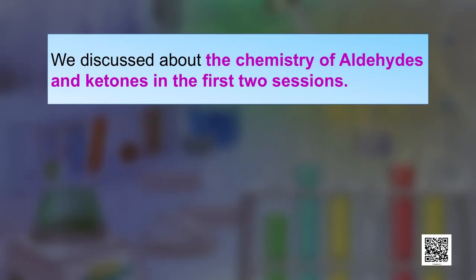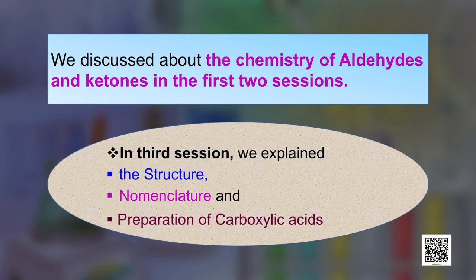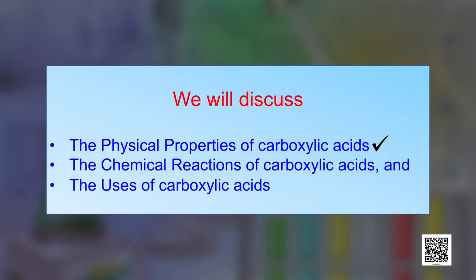Welcome learners to this last session on aldehydes, ketones, and carboxylic acids, Part 4. This is the fourth and last session of this series. We discussed the chemistry of aldehydes and ketones in the first two sessions, while in the third session we explained the structure, nomenclature, and preparation of carboxylic acids. In continuation, this session will discuss the physical properties of carboxylic acids.